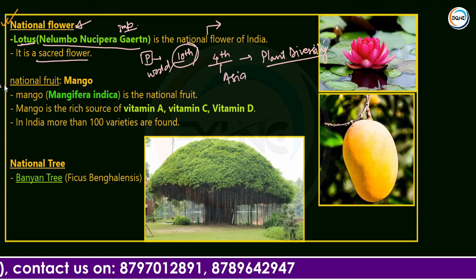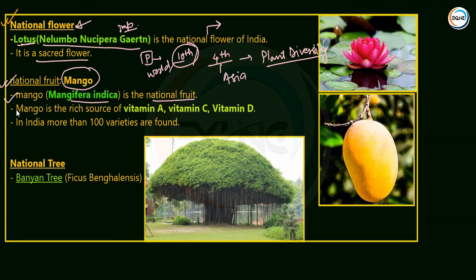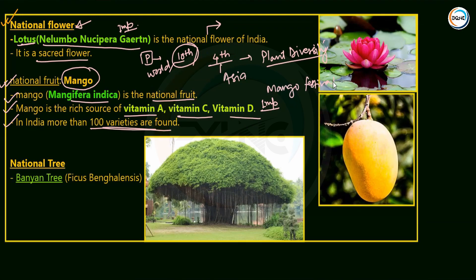The National Fruit is the mango. Its scientific name is Mangifera indica. Mango is a rich source of Vitamin A, Vitamin C, and Vitamin D — do not confuse, Vitamin B is not here. India has more than 100 varieties of mango. The Mango Festival is organized in Delhi.